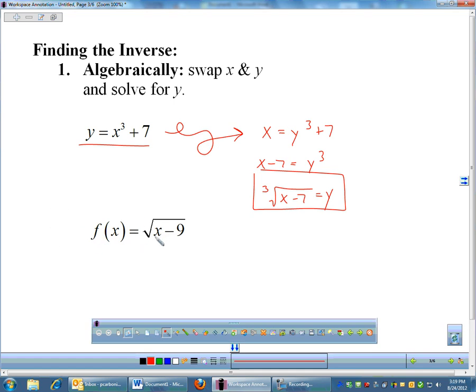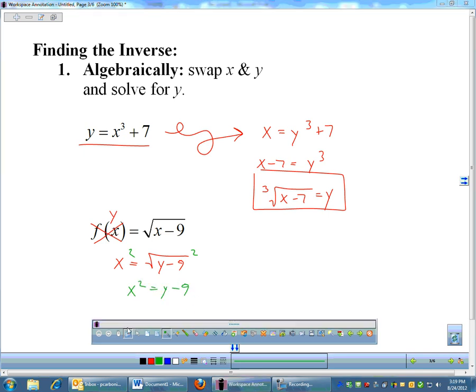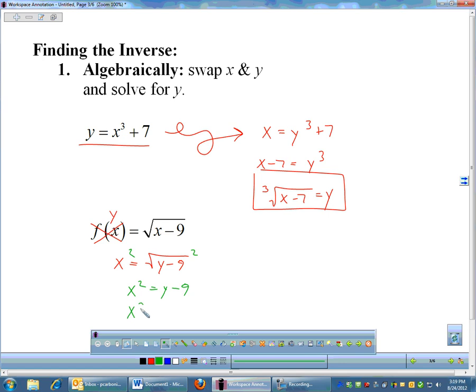So f(x) equaling the square root of x - 9. Remember, f(x), you could treat that like a y. So if I swap the x and the y, that becomes x = √(y - 9). And then we'll solve the equation. We'll square both sides. That's x² = y - 9. And then you get x² + 9 = y. And that is our inverse for the square root of x - 9. So there we go. You can find an inverse algebraically.